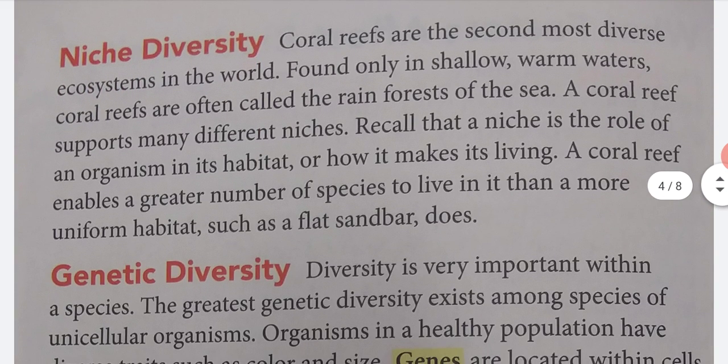Niche diversity. Coral reefs are the second most diverse ecosystems in the world. Found only in shallow, warm waters, coral reefs are often called the rainforests of the sea. A coral reef supports many different niches. Recall that a niche is the role of an organism in its habitat, or how it makes its living. A coral reef enables a greater number of species to live in it than a more uniform habitat, such as a flat sandbar, does.